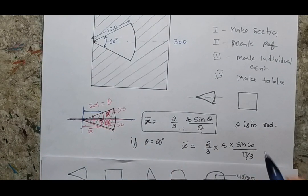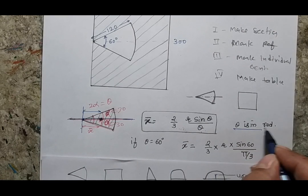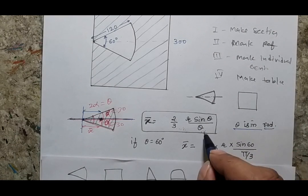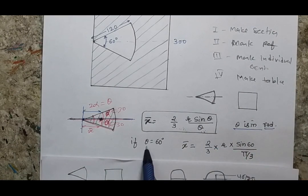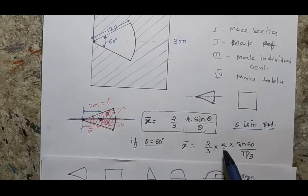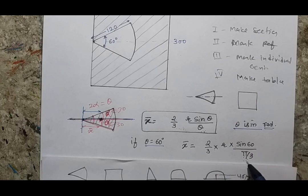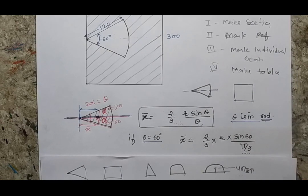Please remember that theta must be substituted in radians, not in degrees. So in this case, if theta is 60 degrees, the position of the centroid will be defined by 2/3 × r × sin(60°) / (π/3), since π/3 radians equals 60 degrees.